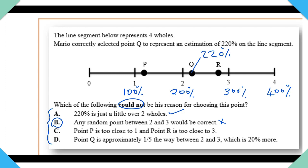We can still look at point C and D just to confirm that we are absolutely correct. Option C says point P is too close to 1 and point R is too close to 3. Point P, yes, that is true. And that is true. And then option D: Point Q is approximately one-fifth the way between two and three, which is 20% more. That is also true. If you don't see why B is our answer, check out part one of this video series.